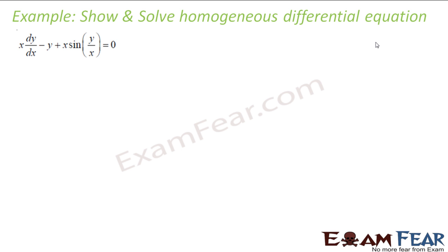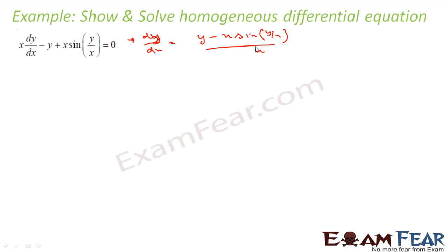Let us take another example: x·dy/dx − y + x·sin(y/x) = 0. First, you have to find whether this is a homogeneous equation or not. To do this, let us find dy/dx. So dy/dx will come out to be y minus x·sin(y/x), all over x. If you divide everything by y, you get something in terms of y by x and sin(y/x), and this is a homogeneous differential equation.